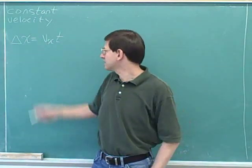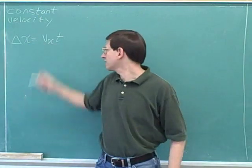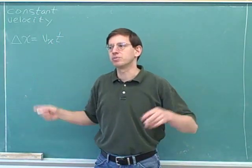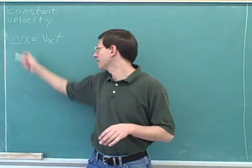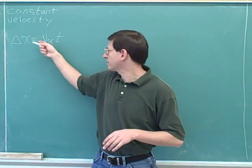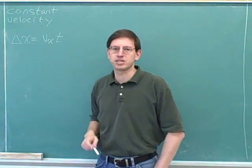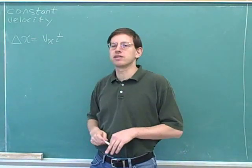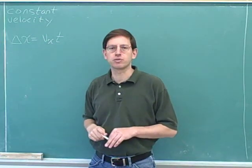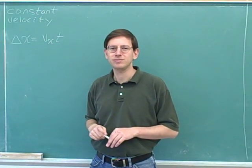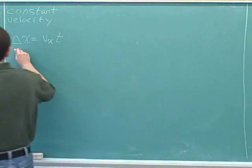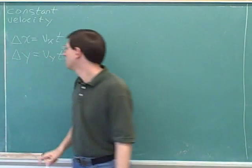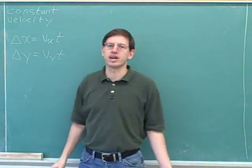Displacement is kind of like the distance, your velocity is your rate of motion, and here's the time. So when dealing with constant velocity, you can just use the simple equation: distance equals rate times time, or in our terms, displacement equals velocity times time — written here for the x component.